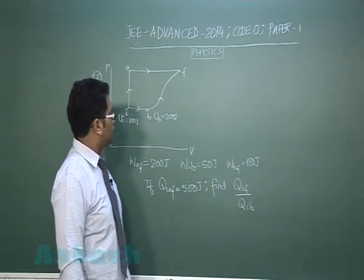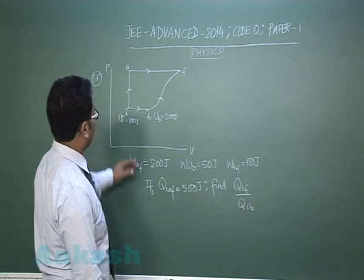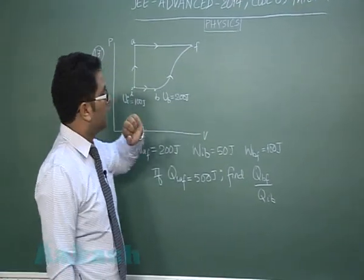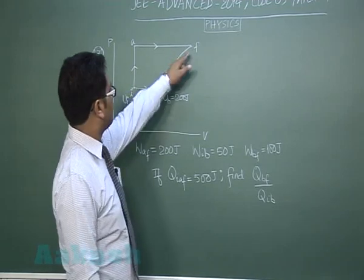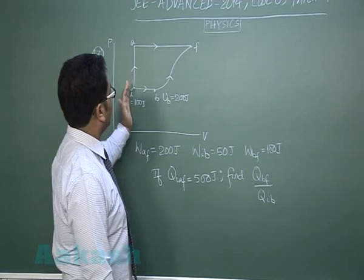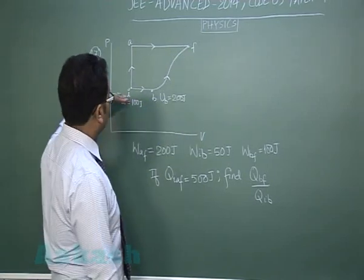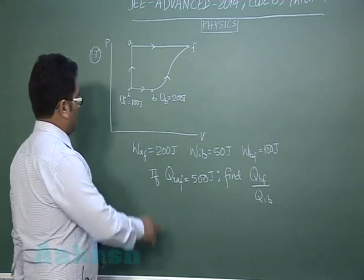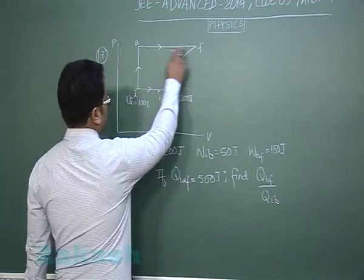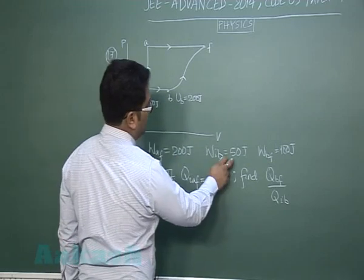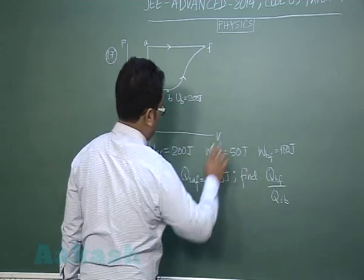Question number 17 is from thermodynamics where this is the initial point, this is the final point, and to reach from initial to final we have two different paths, either via the upper path or via the lower path.